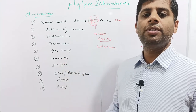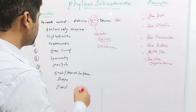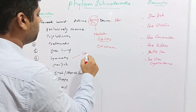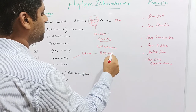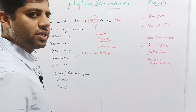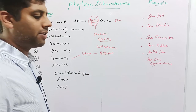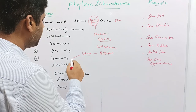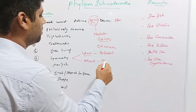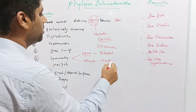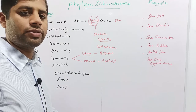Echinoderms show a unique symmetry. The larvae show bilateral symmetry and are therefore called bipinaria larvae. The adults show radial symmetry. This is a distinct feature of the Echinoderms which is different from the rest of the phyla.